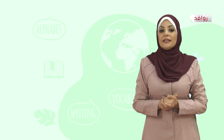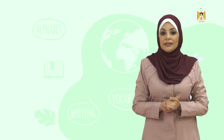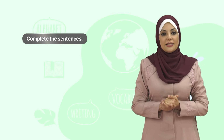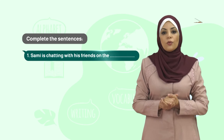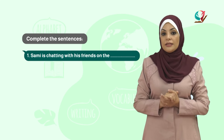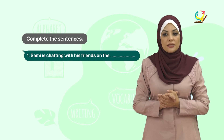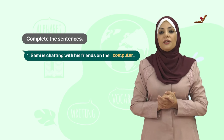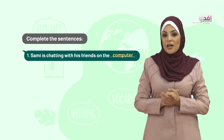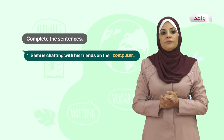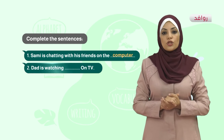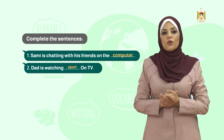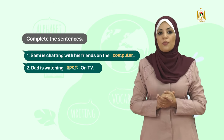After listening to the second part of the conversation, let's complete the sentences. Number 1: Sammy is chatting with his friends on the computer. Sammy يدردش مع أصدقائه على الحاسوب. Number 2: Dad is watching sport on TV.